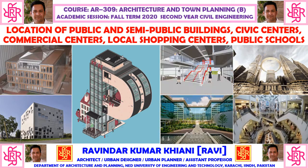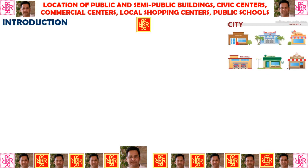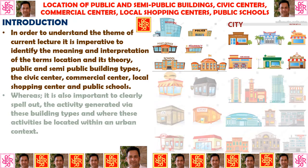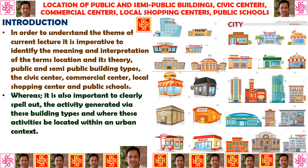In a city you find a variety of buildings. In order to understand the theme of the current lecture, it is imperative to identify the meaning and interpretation of the terms: location and its theory, public and semi-public building types, the civic center, the commercial center, the local shopping center, and public schools. It is also important to clearly spell out the activity generated via these building types and where these activities should be located within an urban context.